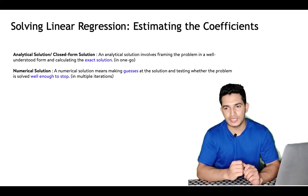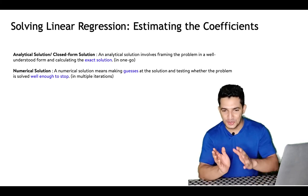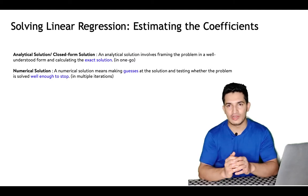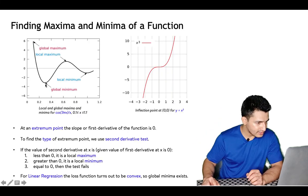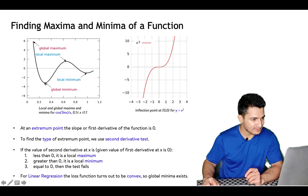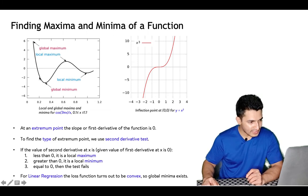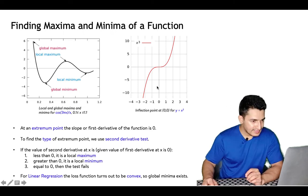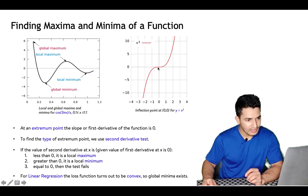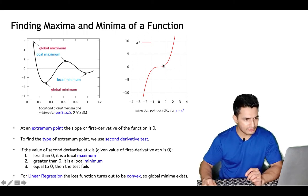To understand the analytical solution, let's go back to high school mathematics where we learned finding minima or maxima of a function. A function can have local minima, local maxima, a global maxima, and a global minima — collectively called extremum points. For the function y = x³, the point where the function changes direction is called an inflection point — it's neither a maxima nor a minima.